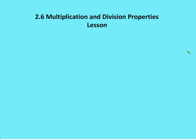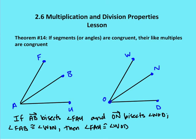Alright, multiplication and division properties. Before we talked about addition and subtraction properties with respect to segments and angles, and now we're going to talk about multiplication and division properties with respect to segments and angles. So theorem 14, if segments or angles are congruent, then their like multiples are congruent.